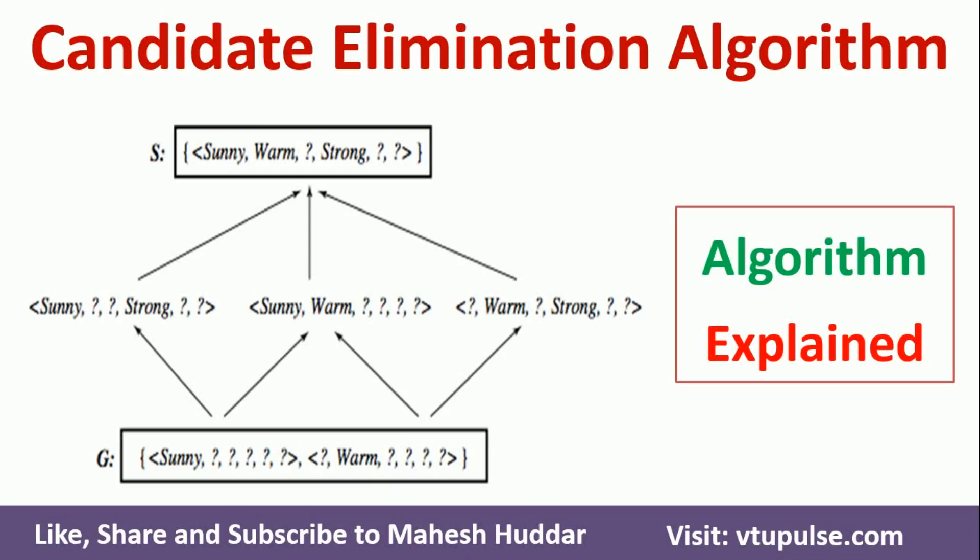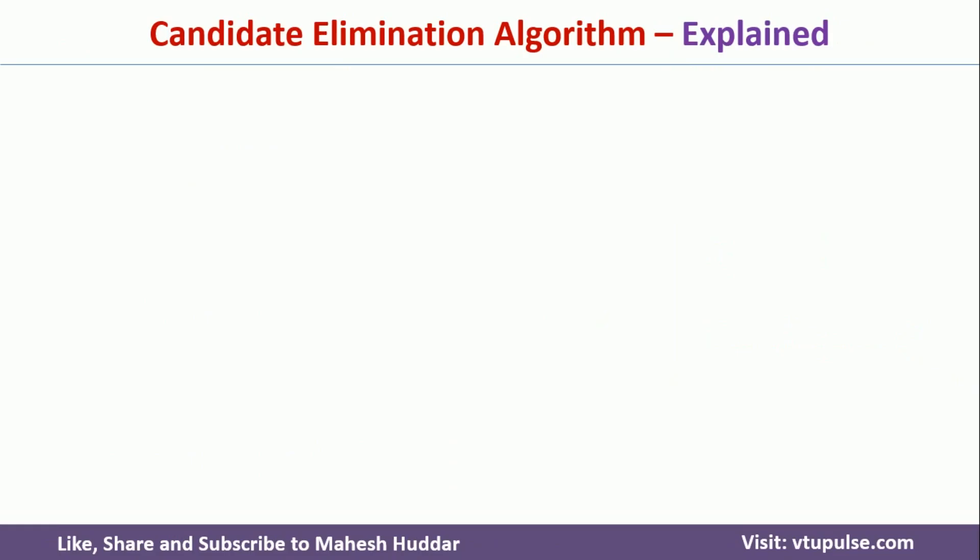Welcome back. In this video, I will discuss the Candidate Elimination algorithm. The Candidate Elimination algorithm is used to find the version space, which is nothing but the set of consistent hypotheses with a given set of training examples.